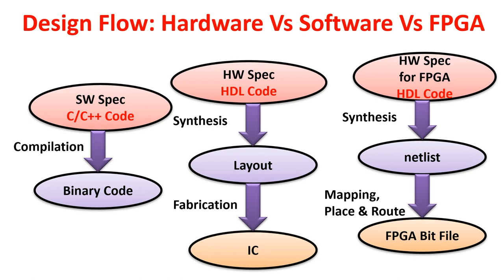In software design flow, the specification is written in C or C++. When you compile it, it generates binary code for a particular machine, producing an executable file. Whenever you execute that file, it gives output — the desired output, whatever was specified in the program, gets executed and produces output.